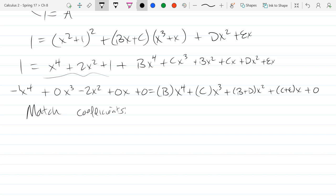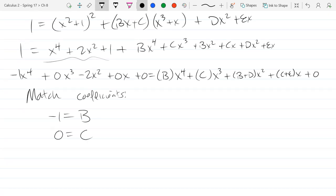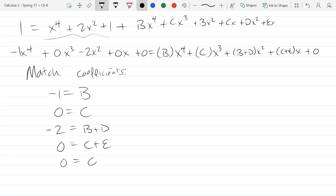In front of x to the fourth is really a negative 1, so we have negative 1 equals b. 0 equals c. Negative 2 equals b plus d. And 0 equals c plus e. The last equation is 0 equals 0, which doesn't tell us anything, but if I got 0 equals 1, I went wrong somewhere.